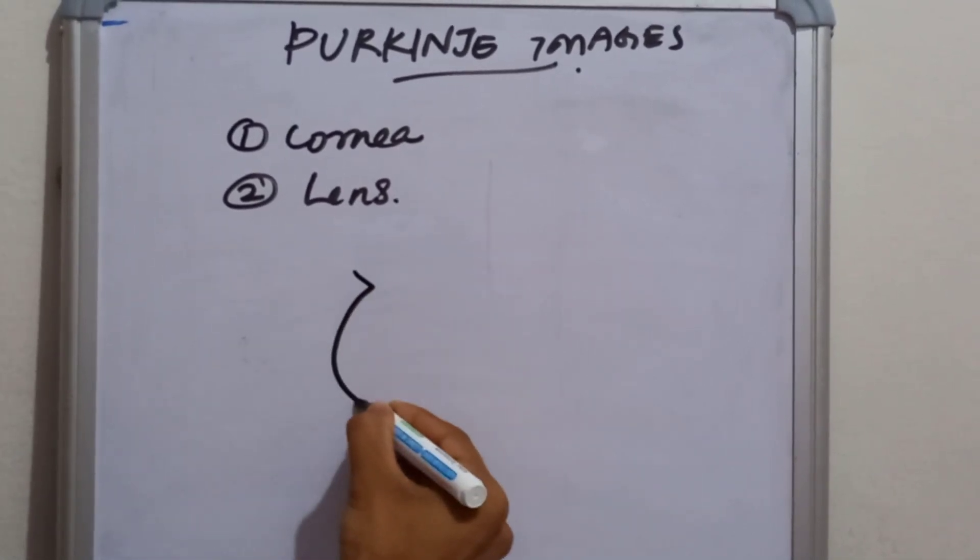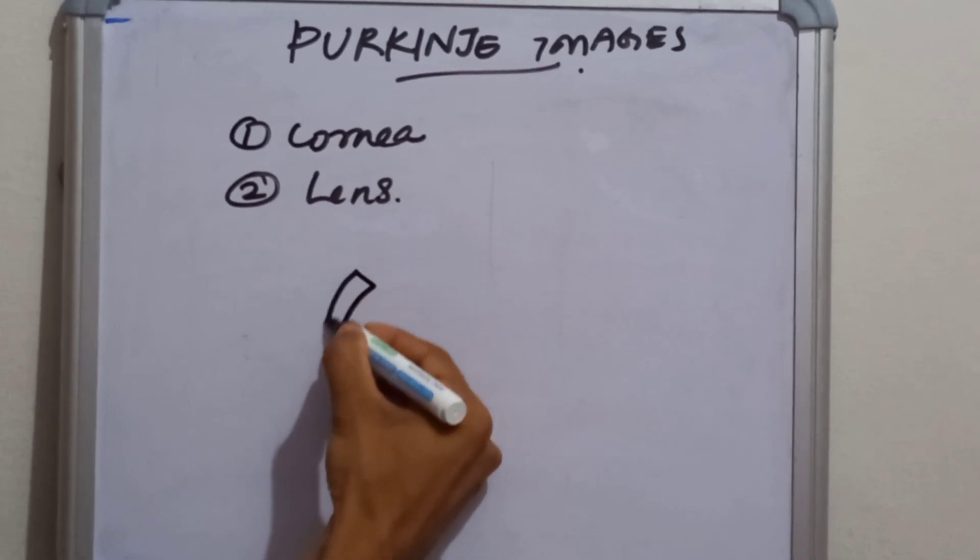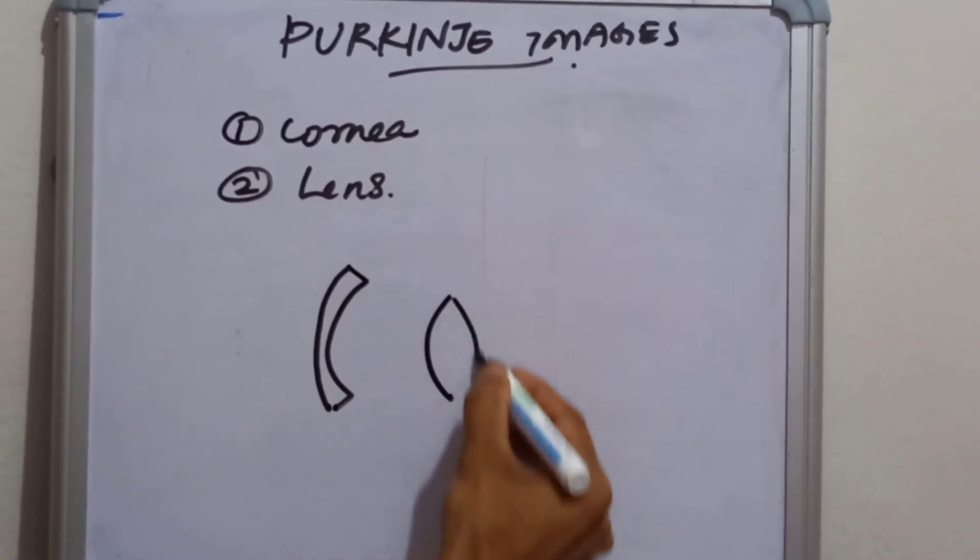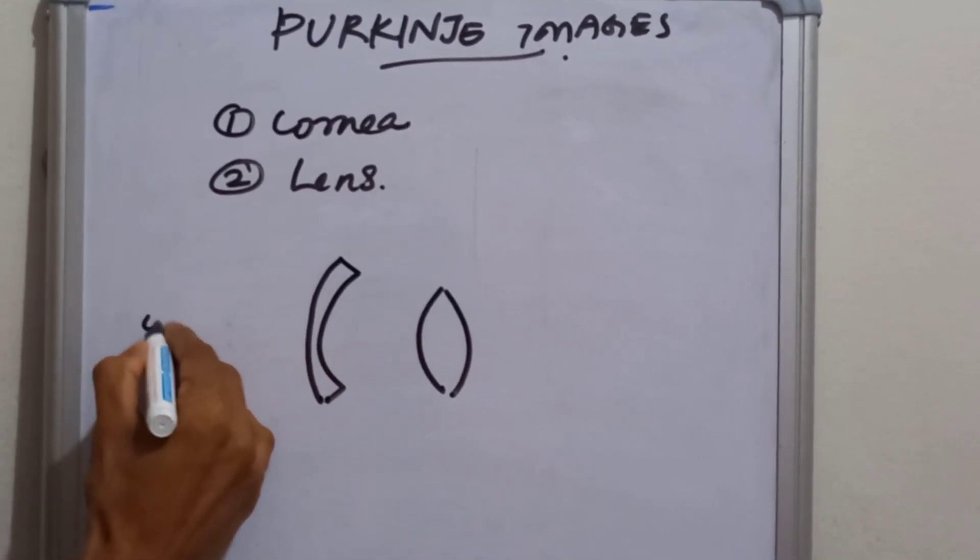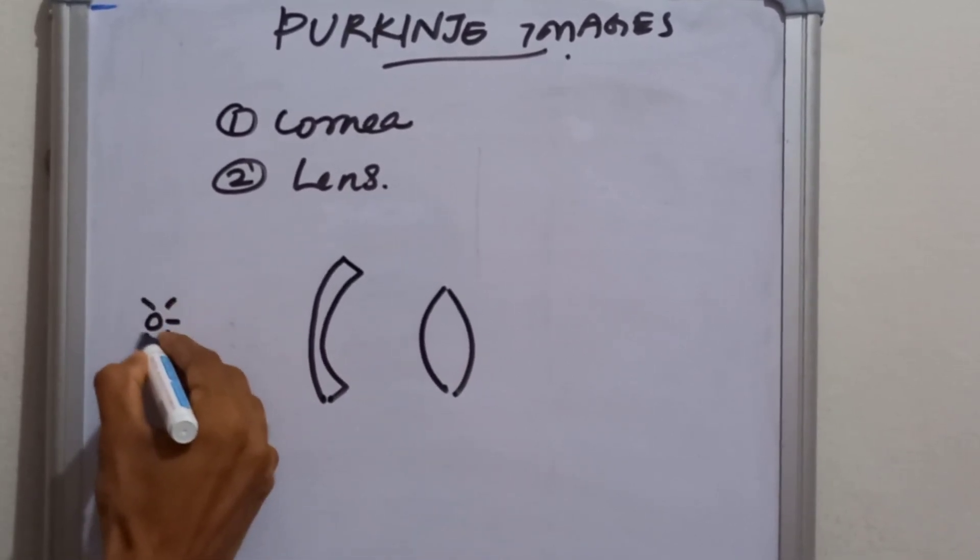So let's draw the cornea here. And let's draw the lens. So the image is formed when we shine a light to the cornea.